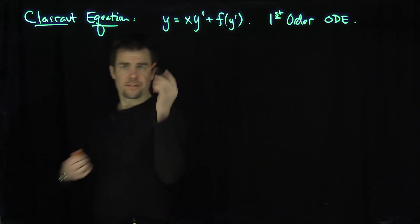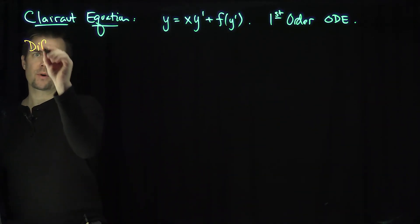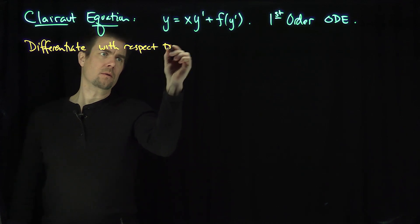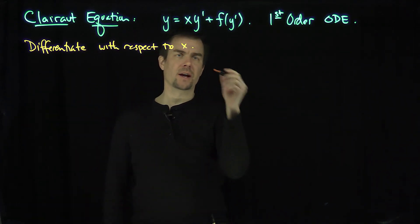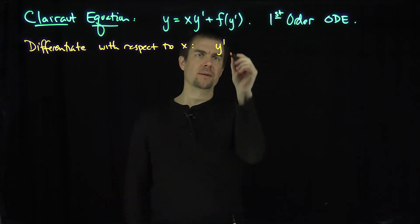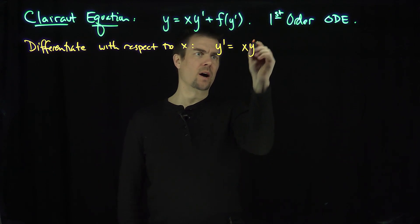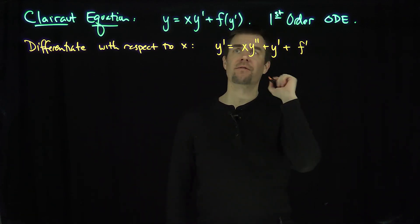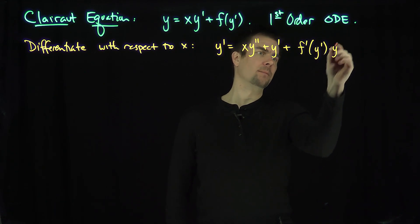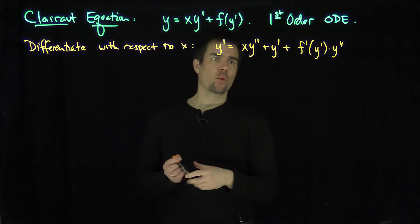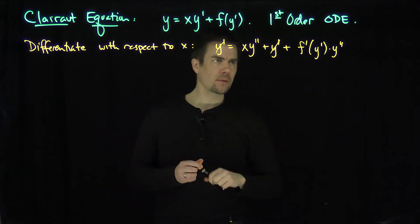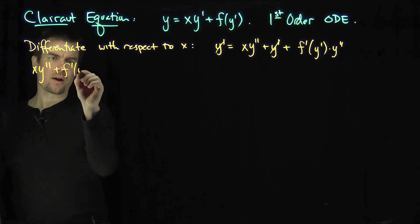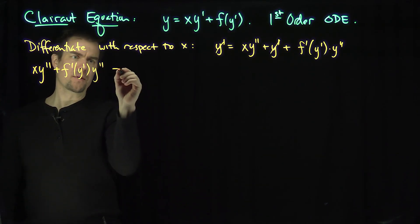If I take this differential equation and differentiate it with respect to x, we'll get y' on the left-hand side. Applying the product rule on the right, I get x times y'' plus y', because the derivative of x is 1, and then plus f' of y' times y'' by the chain rule.